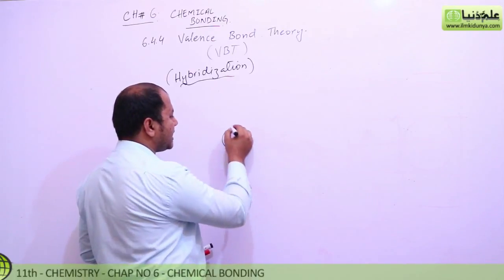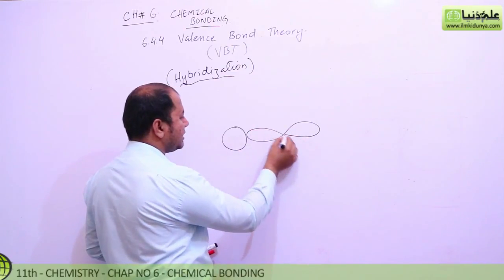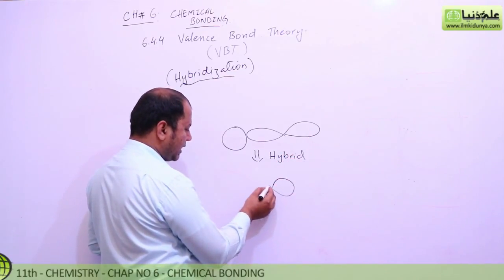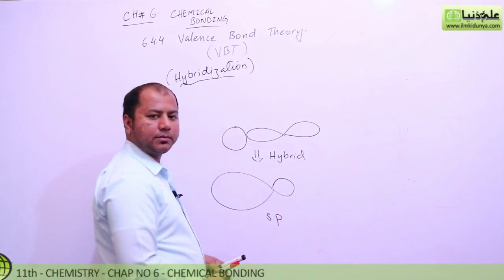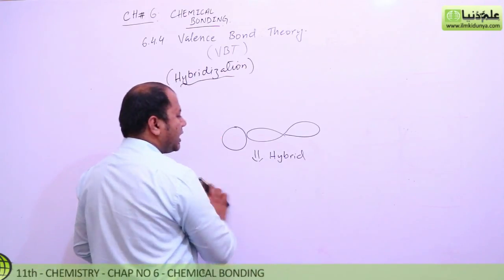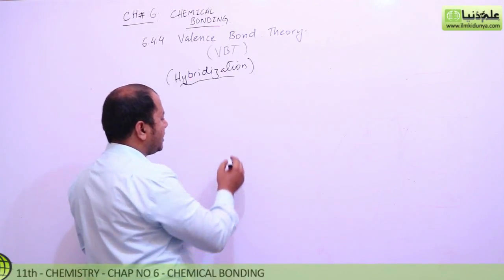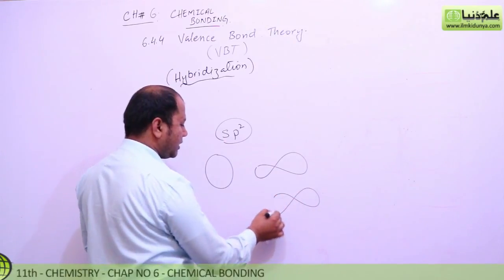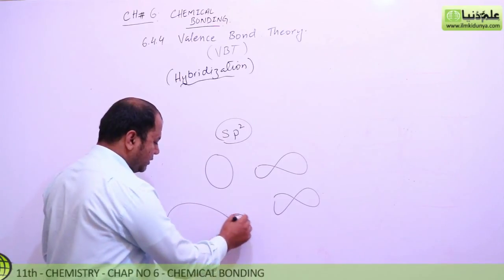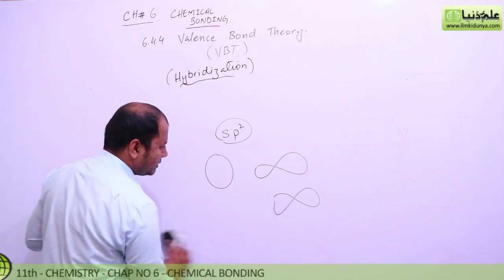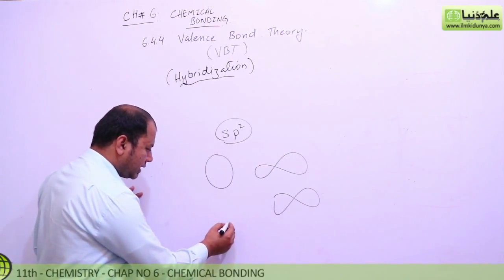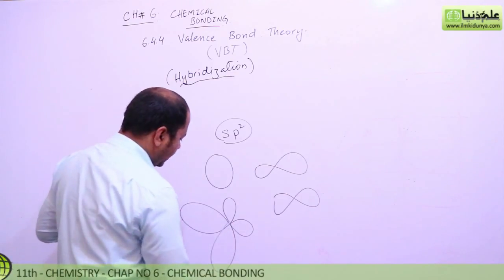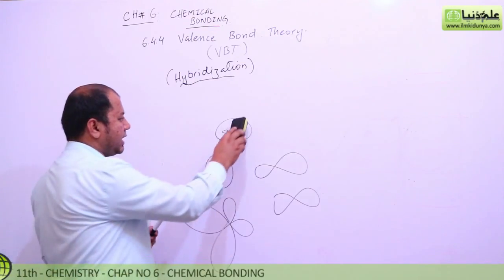Now let's make sp2 hybrid - that means one s and two p orbitals mixing. And we can have sp3 hybrid with one s and three p orbitals combining to create a new hybrid orbital shape.